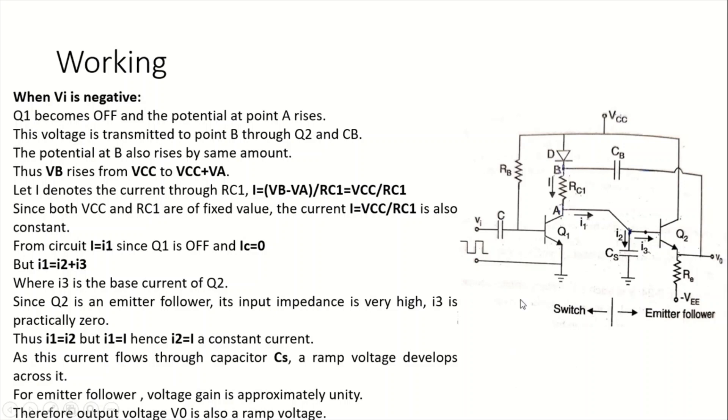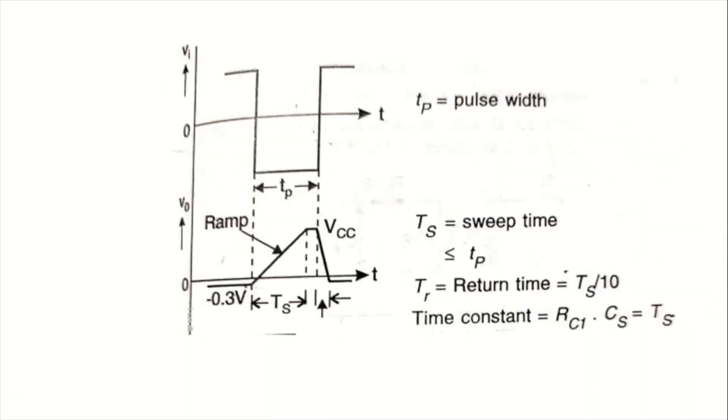This is how this bootstrap time base generator circuit works. These are the output waveforms describing the operation discussed till now. When the input signal is positive, the output will be minus 0.3 volts or slightly negative value. When the input signal goes to negative direction, the potential increases slightly and it generates a linear signal.